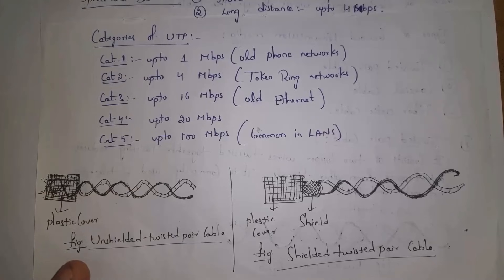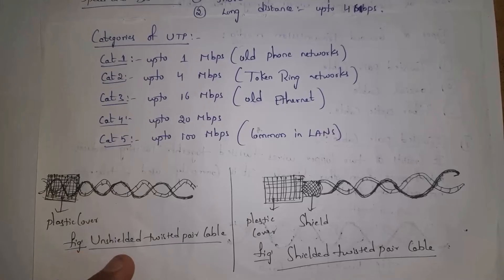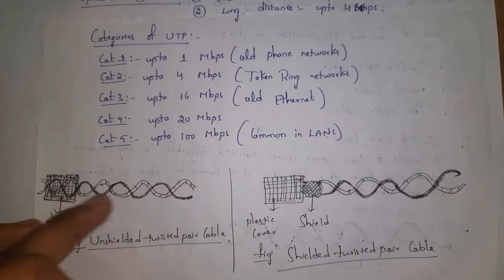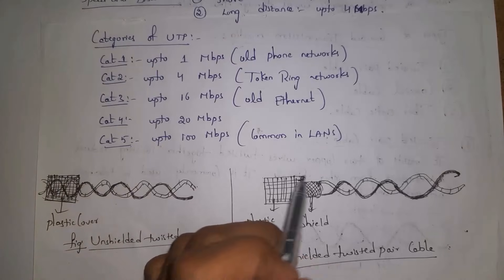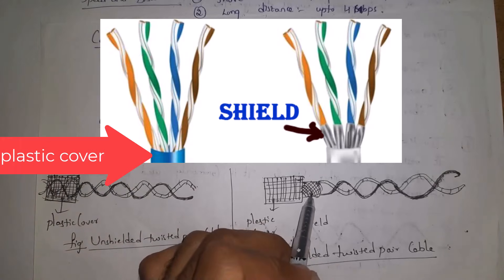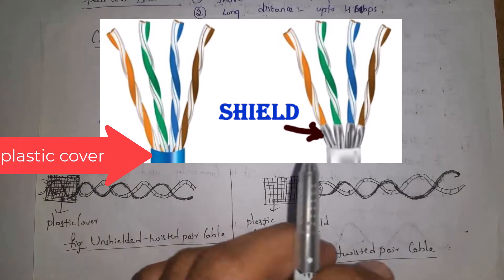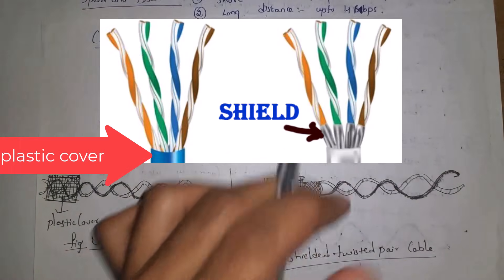This is the unshielded twisted pair where two wires are covered with a plastic cover, and this is the shielded twisted pair where two wires are covered with a copper shield, and that copper shield is covered with a plastic cover.